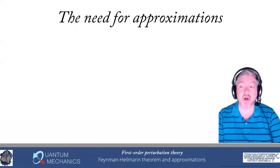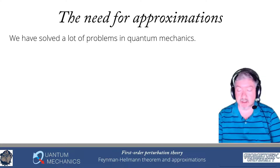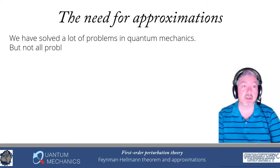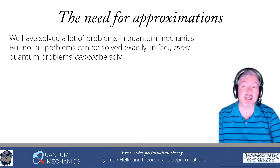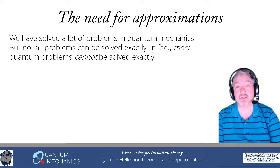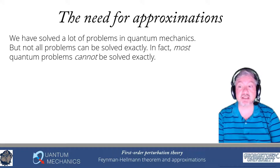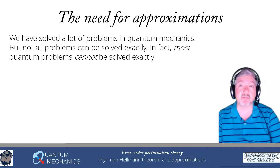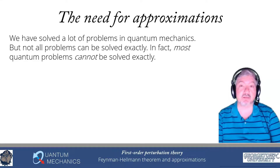I want to start by explaining why we need approximations. We have solved a lot of problems in quantum mechanics already — at least a dozen, maybe even more — but not all problems can be solved exactly. In fact, most quantum problems cannot be solved exactly, and you'd typically have to do something numerically. But if there is an exactly solvable model that is not too different from the model you're trying to solve, you can perturb the exactly solvable model in such a way that you can determine the properties of the solution.